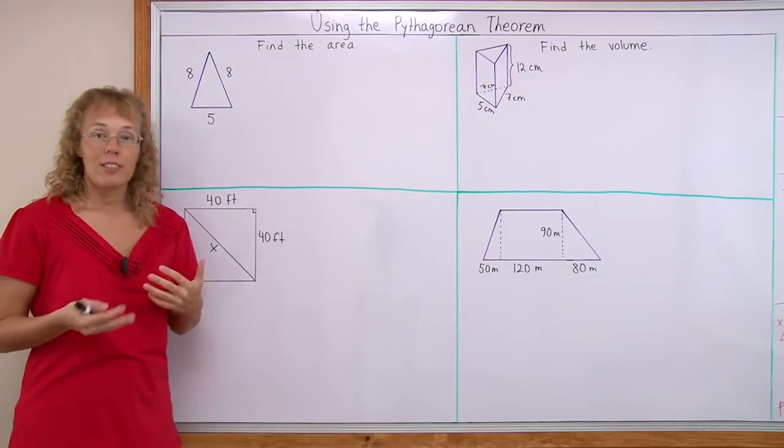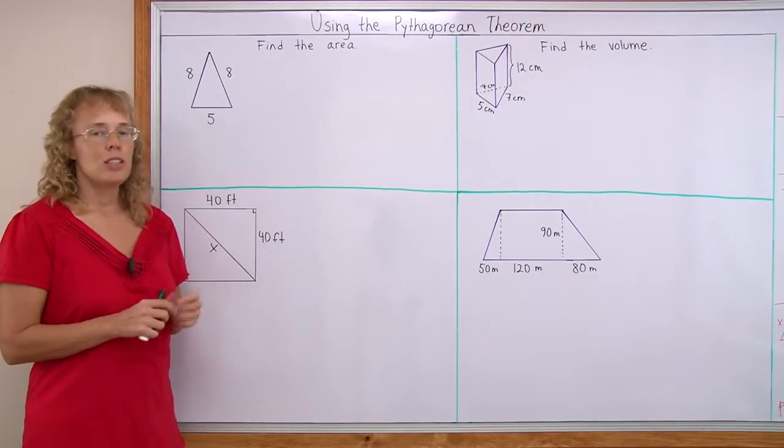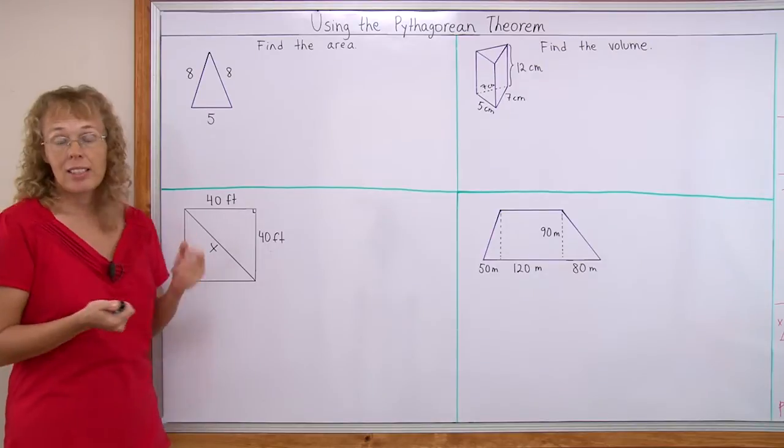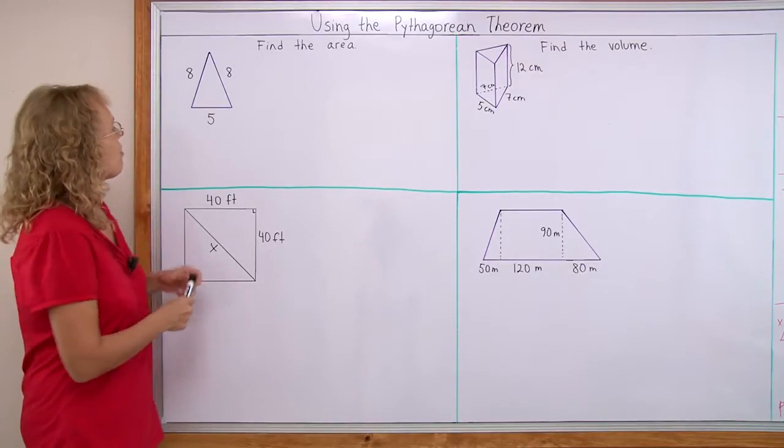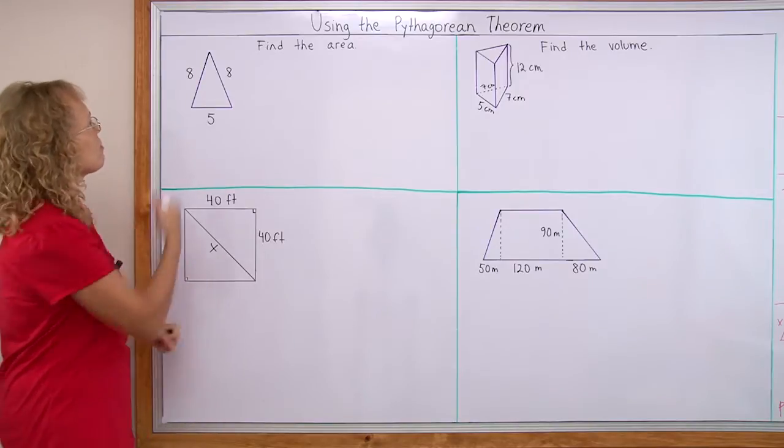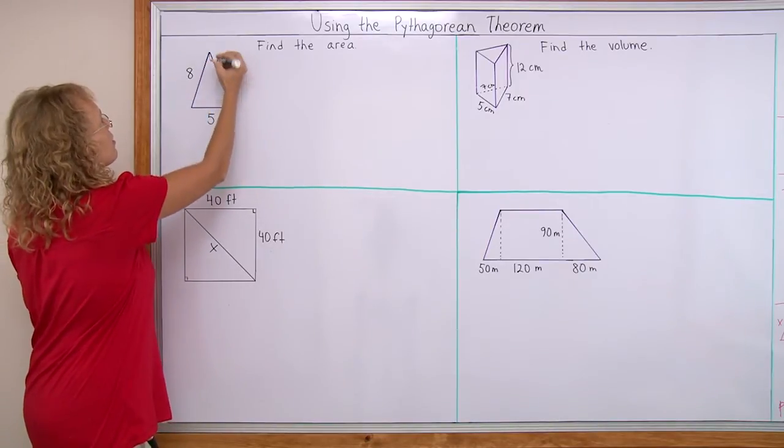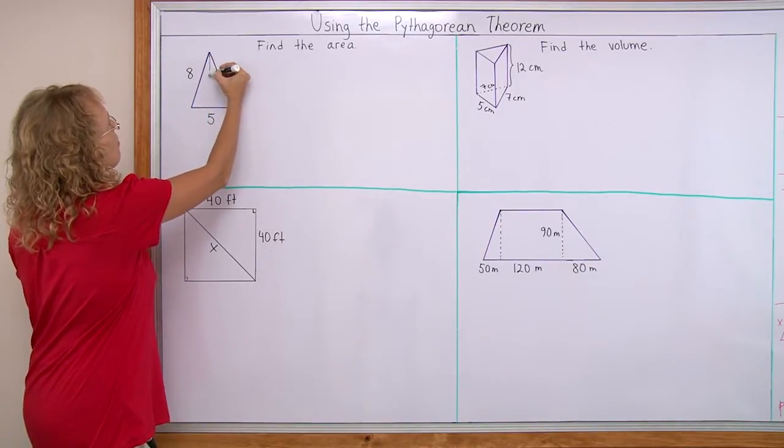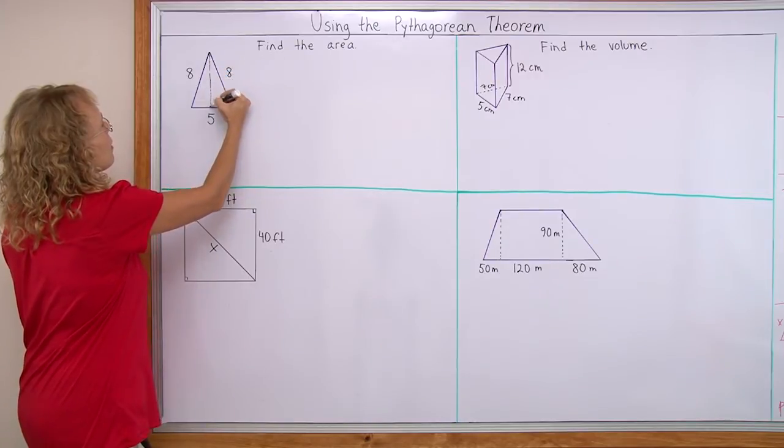Now, to find the area of any triangle we need two things. We need the base and the altitude, right? The base here would be 5 and the altitude, let me draw it, the height would come from here, from the top, like that.